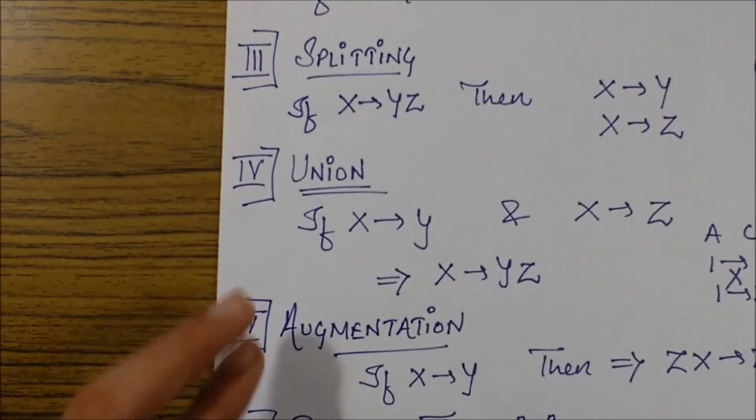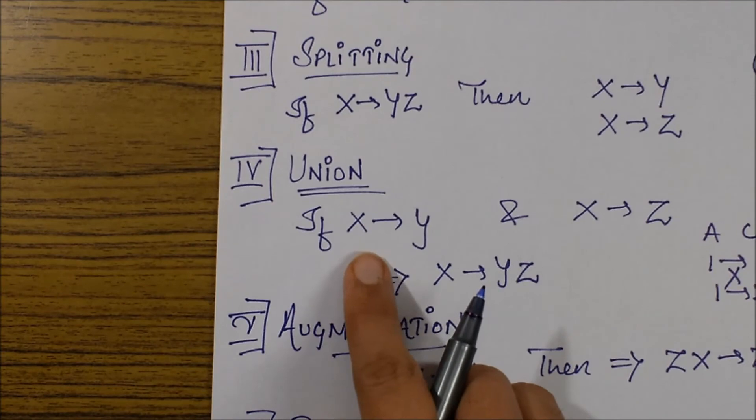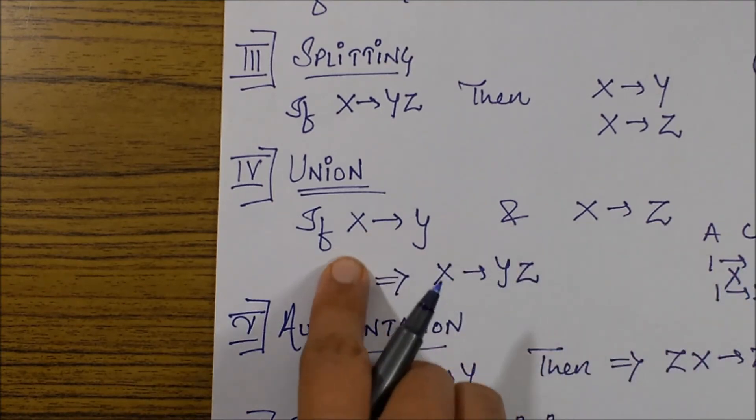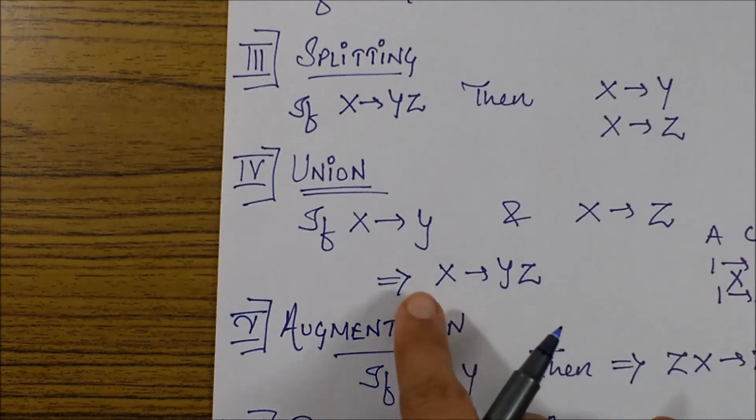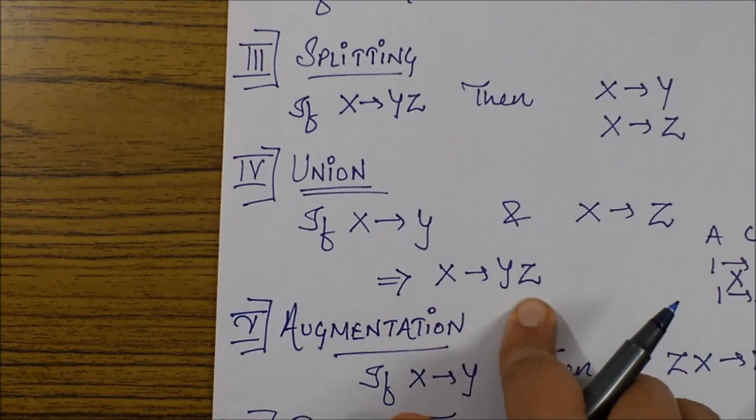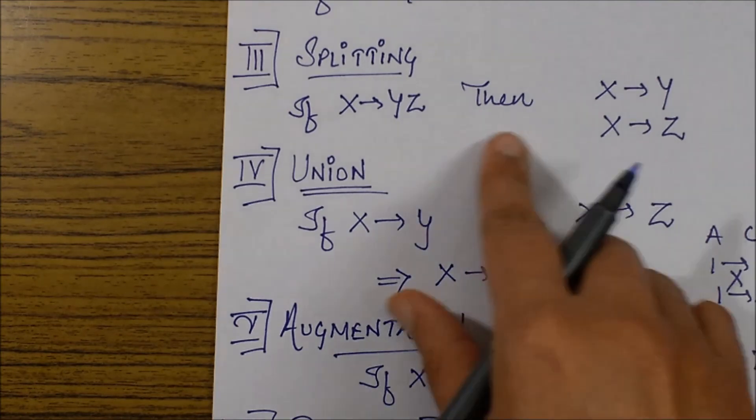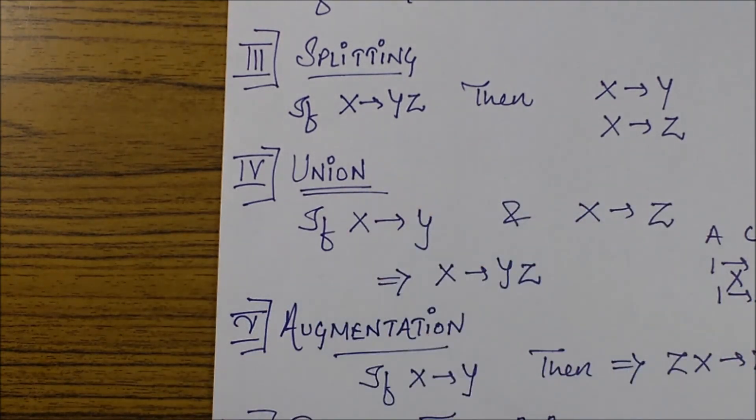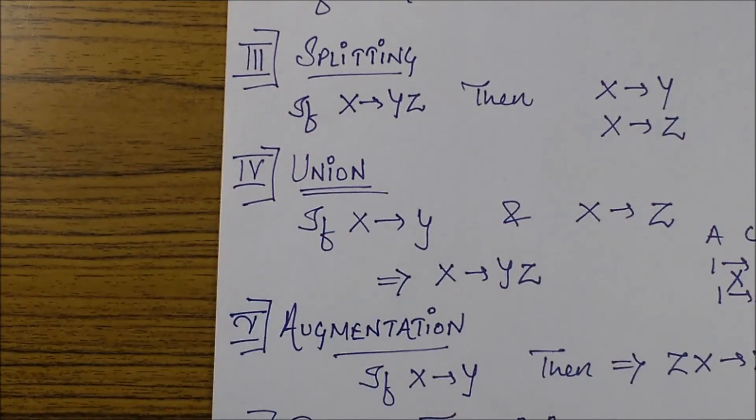Now let's move on to union. What does union state? Union states that if I have been given two dependencies, X determines Y and X determines Z, then I can say that X determines YZ. So basically, I am just combining the right hand side because there is an and clause. You can say it is basically the reverse of your splitting property.